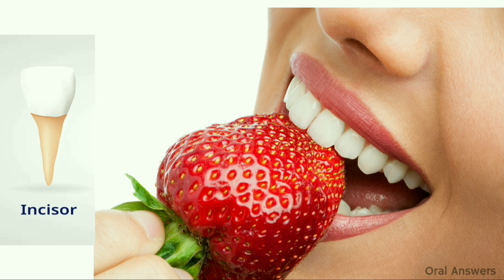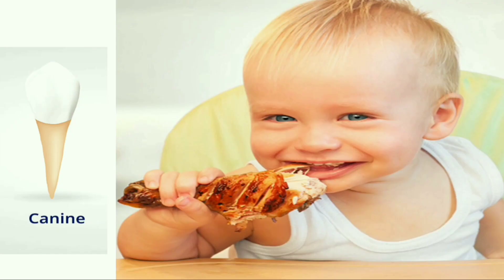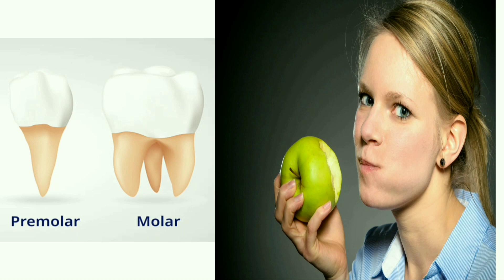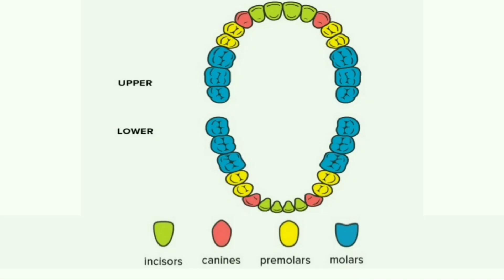Our teeth perform different functions. Incisors help in cutting and biting of food. Canines help in piercing and tearing of food. Premolars and molars help in chewing and grinding of food. There are 4 incisors in the lower jaw and 4 in the upper jaw, making a total of 8 incisors. There are 2 canines in the lower jaw and 2 in the upper jaw, making a total of 4 canines.